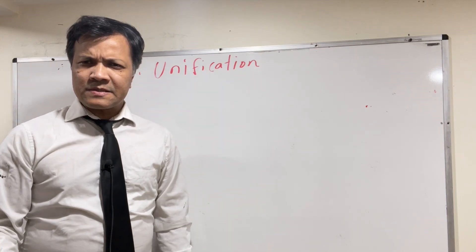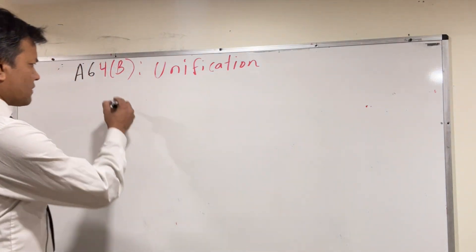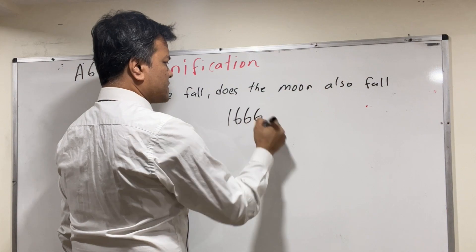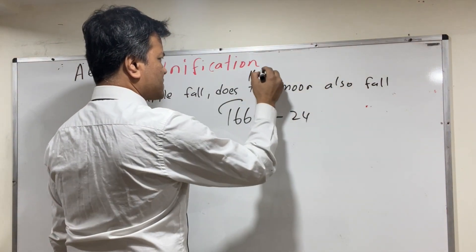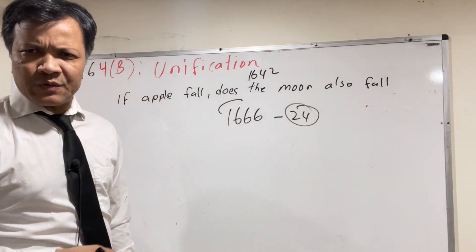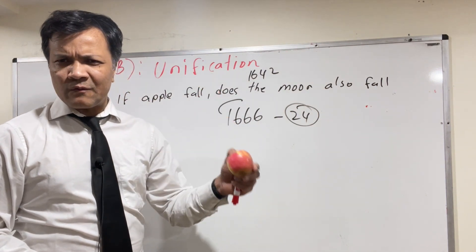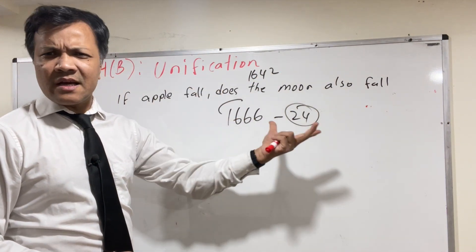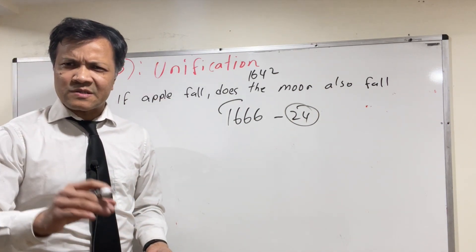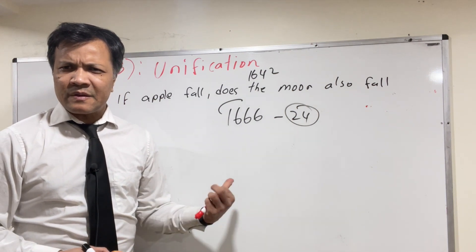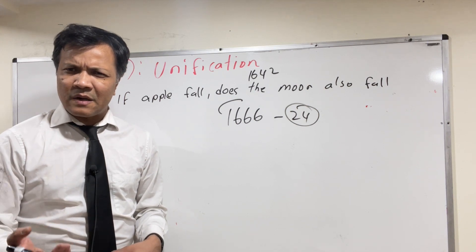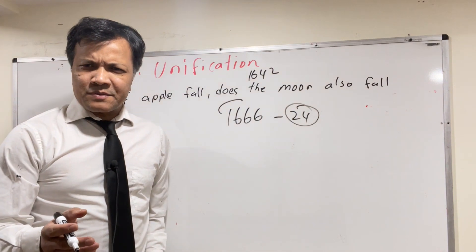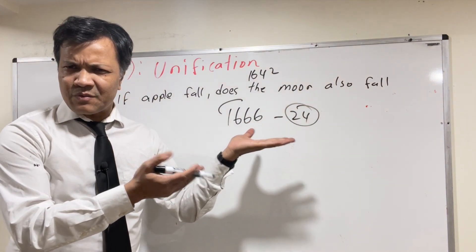Today we're going to be talking about unification, starting with a simple hypothesis: if an apple falls, does the moon also fall? In 1666, a 24-year-old Isaac Newton — born 1642 — was sitting under an apple tree, saw an apple fall, looked at the sky, saw the moon, and asked a key question. Every single discovery in physics starts with a question.